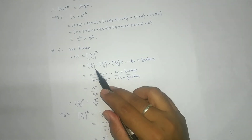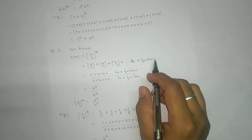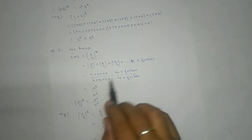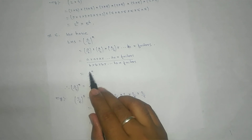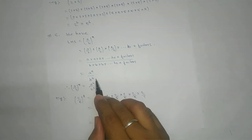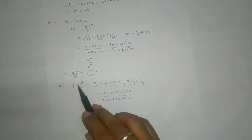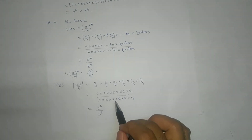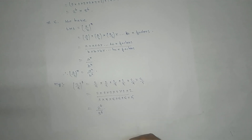The fifth law: a by b to the power n can be represented as a by b multiplied n times. Taking out a separately and b separately, each appears n number of times, so we can write a to the power n divided by b to the power n. For example, 2 by 5 to the power 6 can be broken into numerator and denominator form, giving 2 to the power 6 by 5 to the power 6. I hope it is clear — thank you.